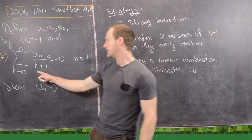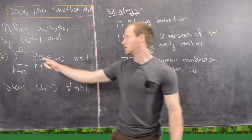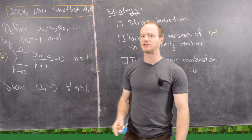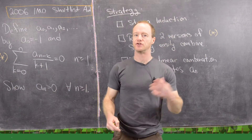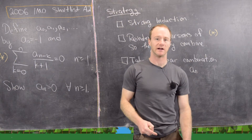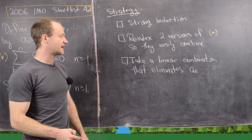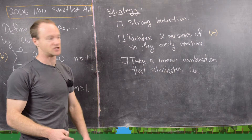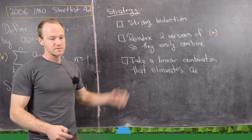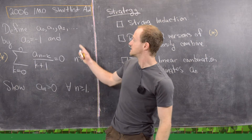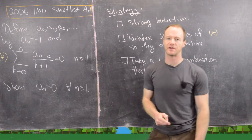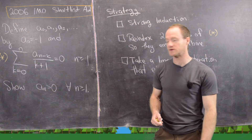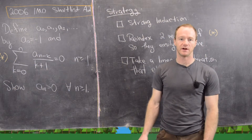There's a hint in the writing of this problem that re-indexing is a good strategy. The sum is indexed with a_{n minus k}. If you look at the n plus first version, you'll have a_{n plus 1 minus k}. These sums don't combine easily, which is a hint that you should re-index them so that they do. Then you want to take a linear combination of these two re-indexed sums so that they eliminate A₀.